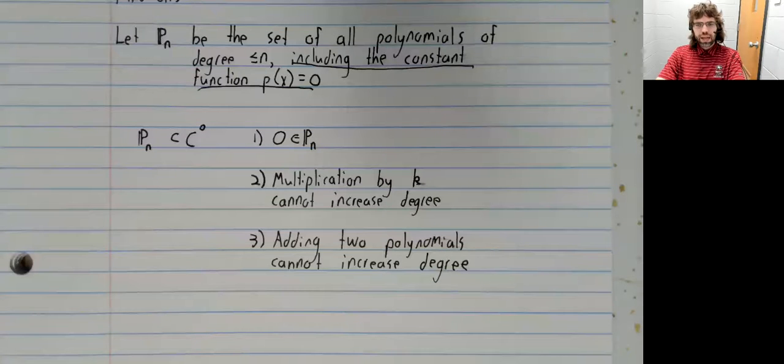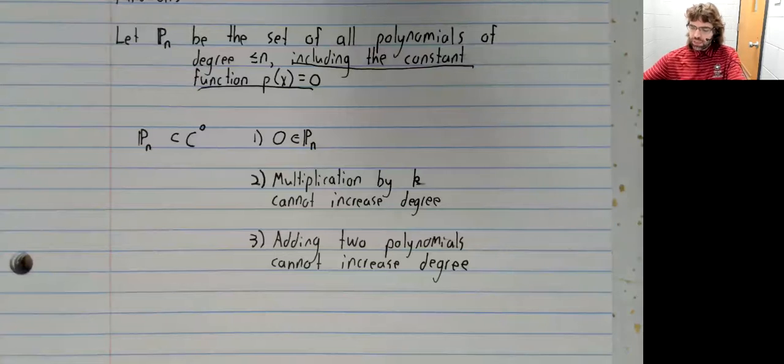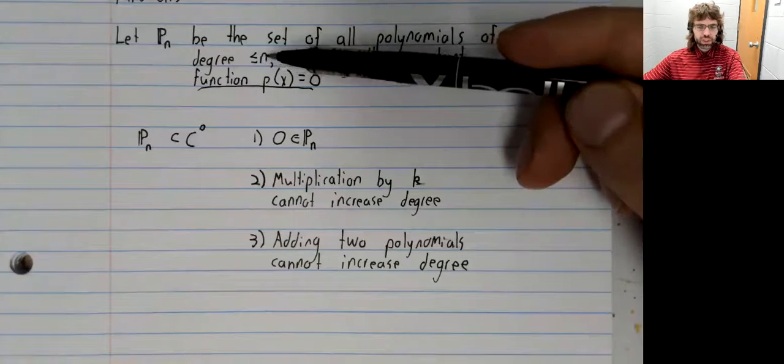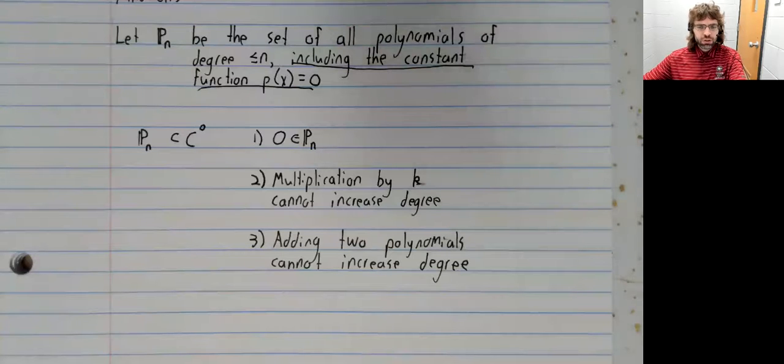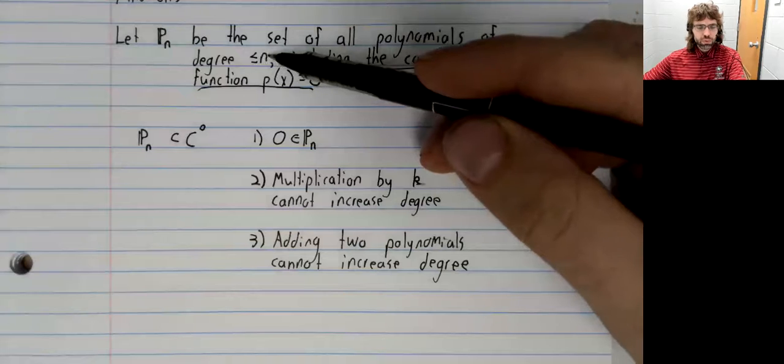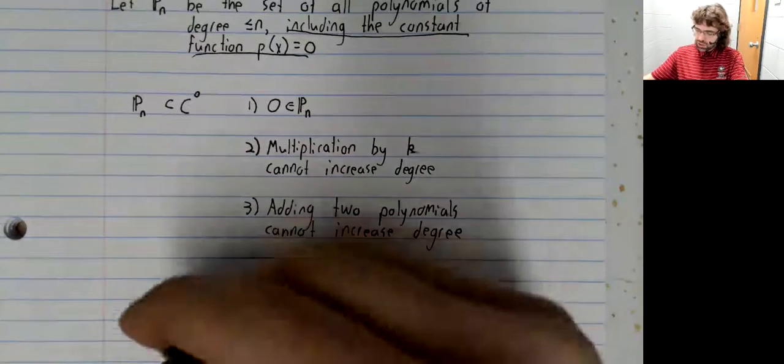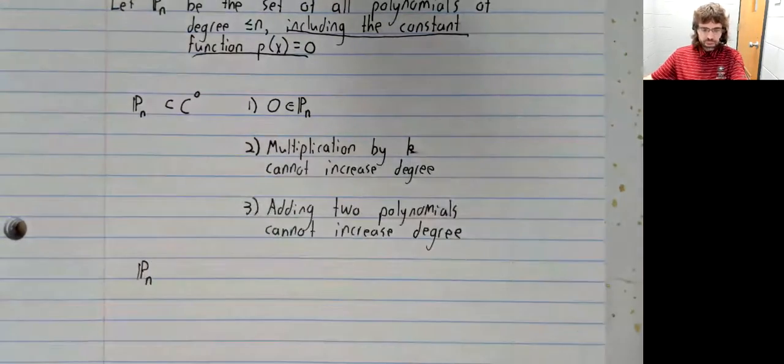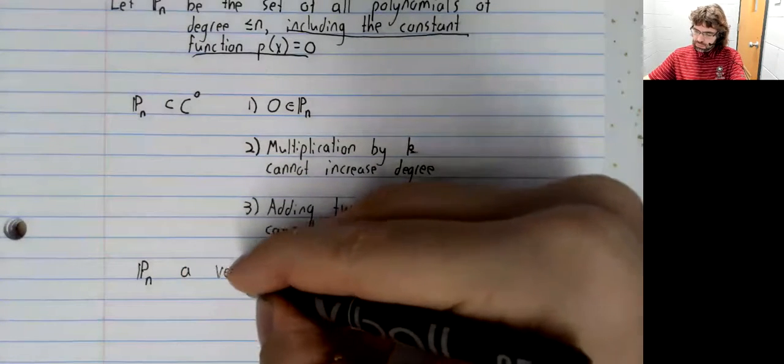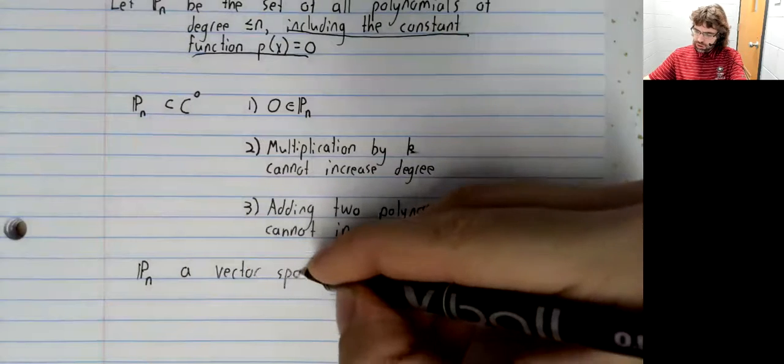Similarly, adding two polynomials cannot increase their degree. It could decrease it if the leading terms cancel out, but it cannot increase it. So if we have two polynomials of degree less than or equal to n, and we add them together, the degree of the sum is still less than or equal to n. These three conditions make P sub n a vector space.